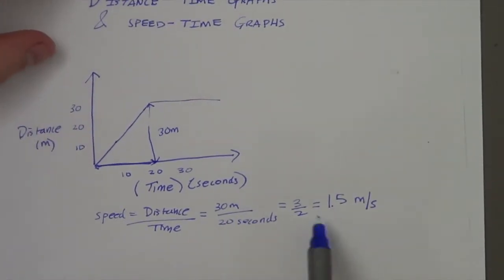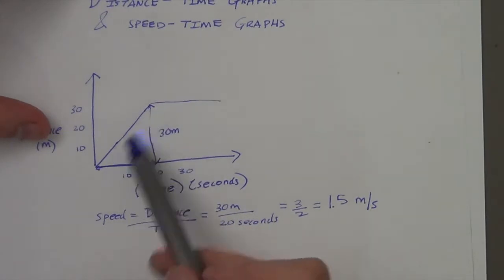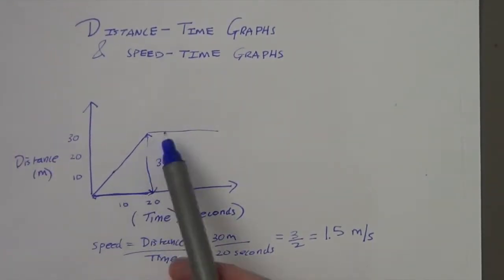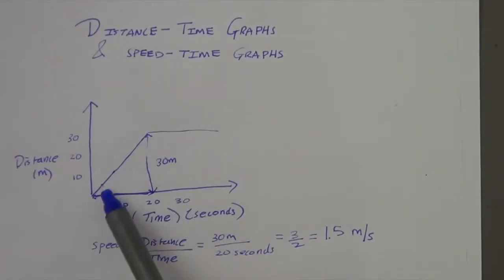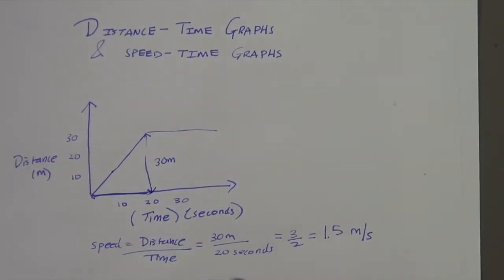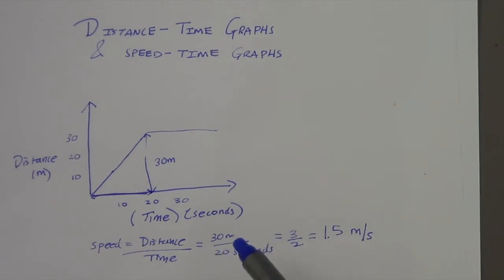That's just a normal calculation, and this is what we call the slope or gradient of a line. This sort of calculation you can do in both maths and physics, so this topic is common to both subjects.